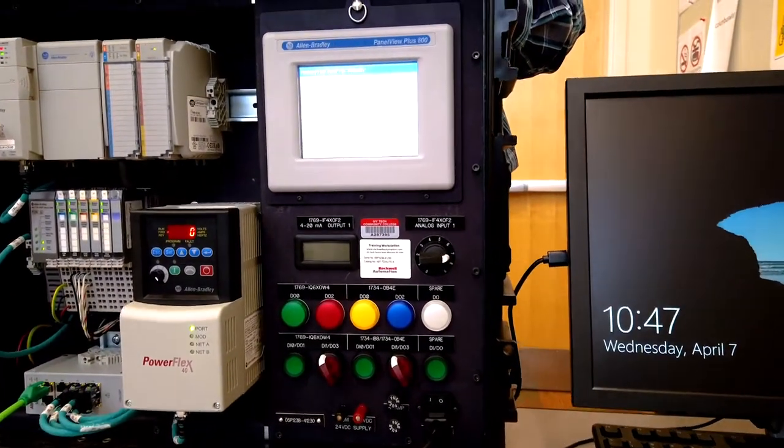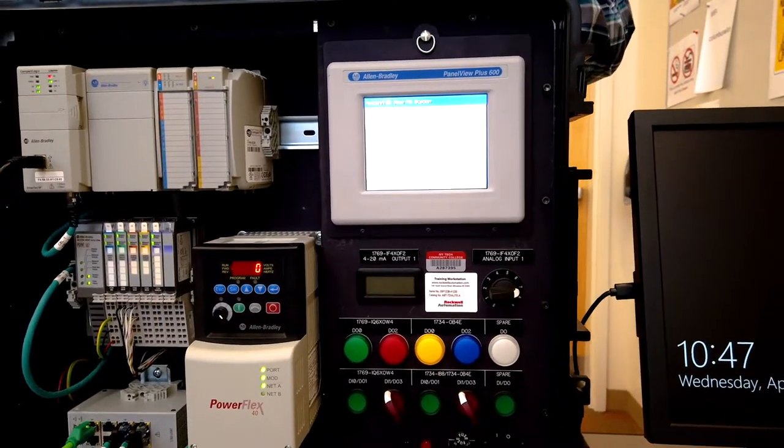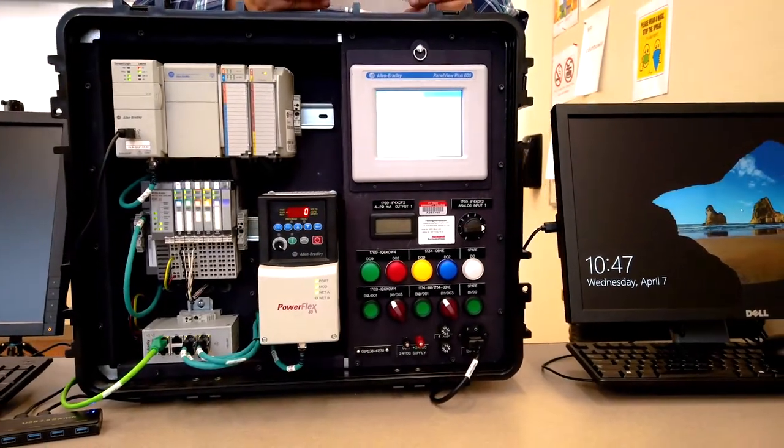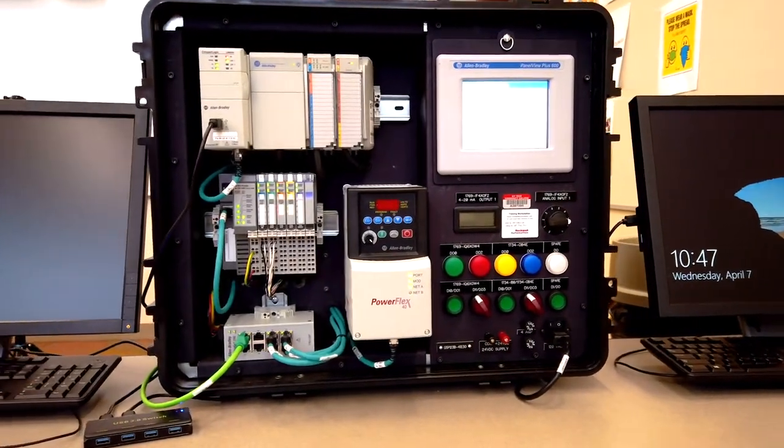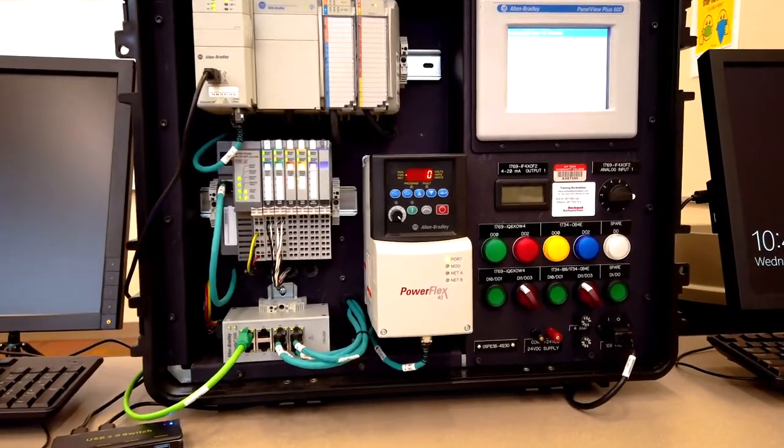Studio 5000 is the program students use to create the ladder logic for the program. Factory Talk View Studio is the program that is used to create the HMI screens for the applications, and RS Links Classic is how we establish our Ethernet connection to the PLCs.